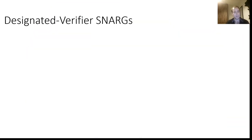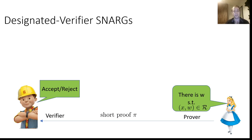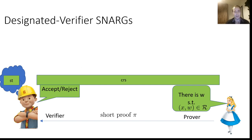Let's dive deeper. Our first goal is a designated verifier SNARK, or succinct non-interactive argument. In this SNARK, we have the prover and the verifier, and the prover wants to convince the verifier about the validity of some claim.